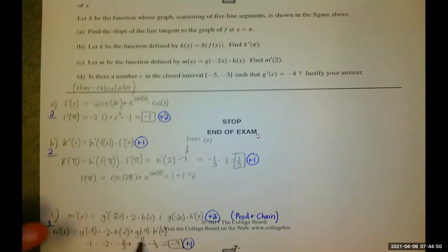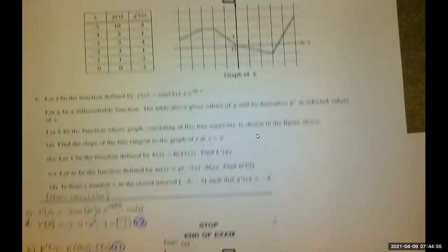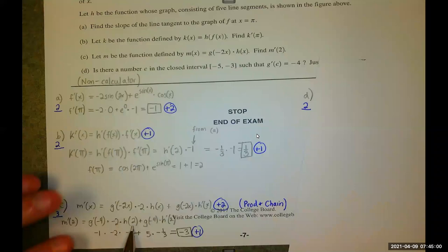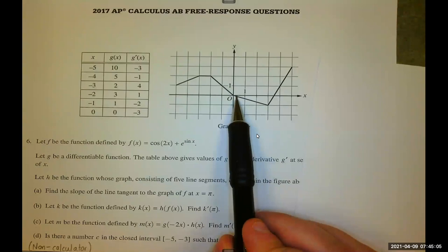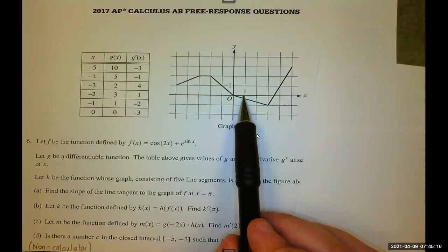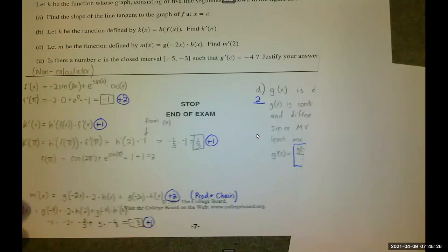H prime of 2, we did in the last one, negative 1 third. G of negative 4 comes from the table. H of 2, a little bit tricky, but I know it has to be negative 2 thirds because I've gone down 1, right 3, but if I only go 1 unit, that means I've gone right 1, which means I've only gone down 1 third of that. And then G prime of negative 4, also from the table, multiply, simplify, get negative 3, done and done.